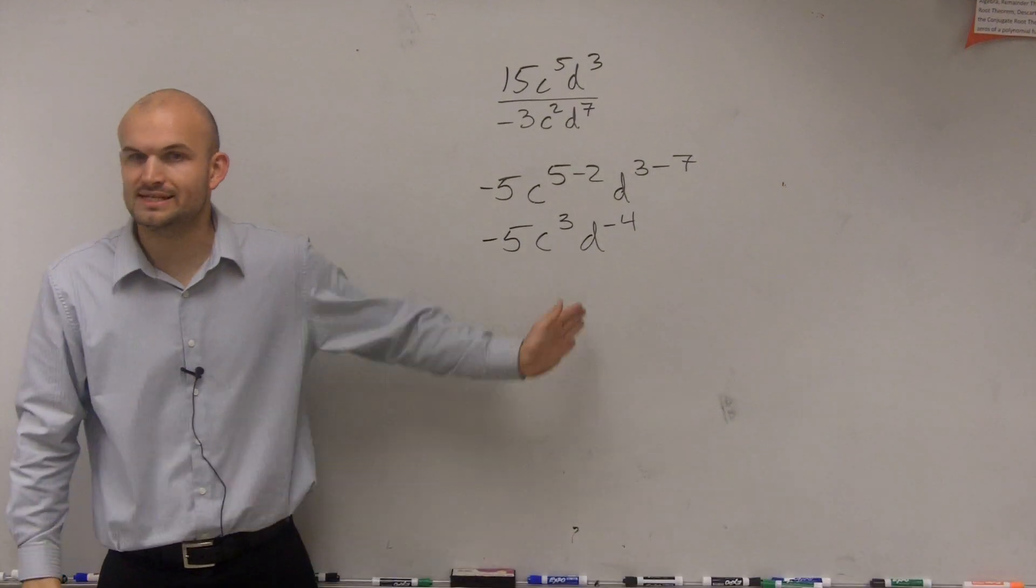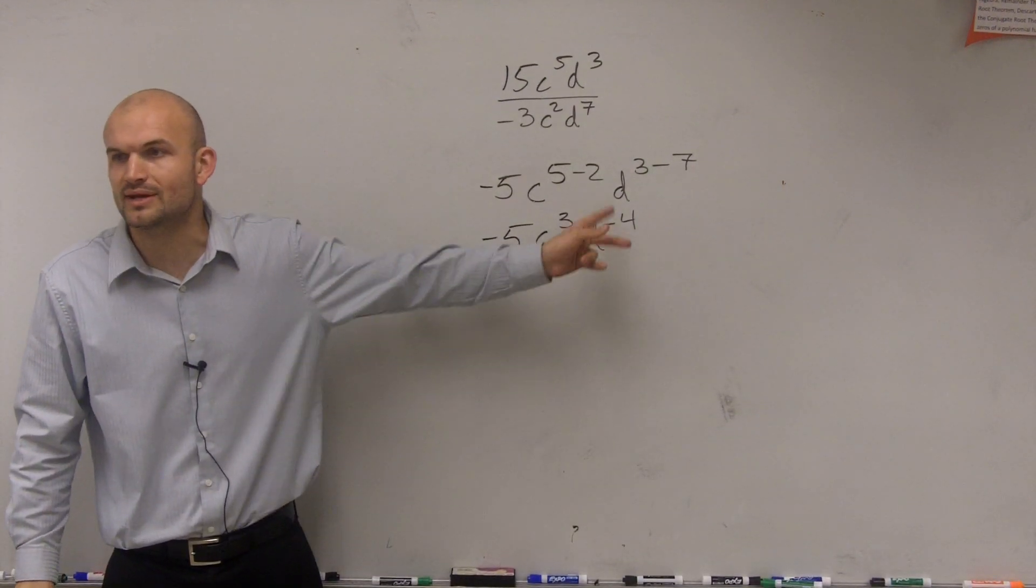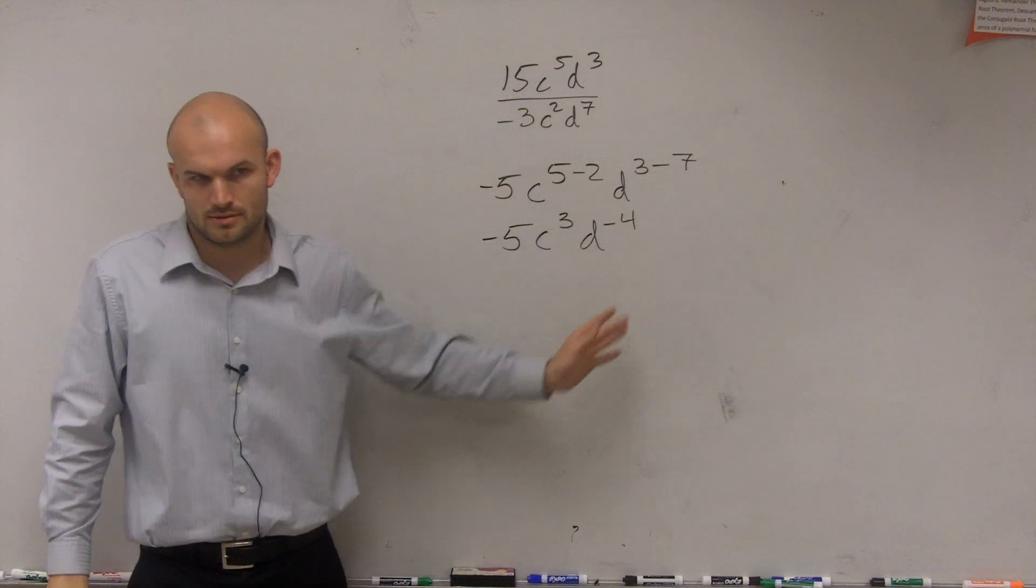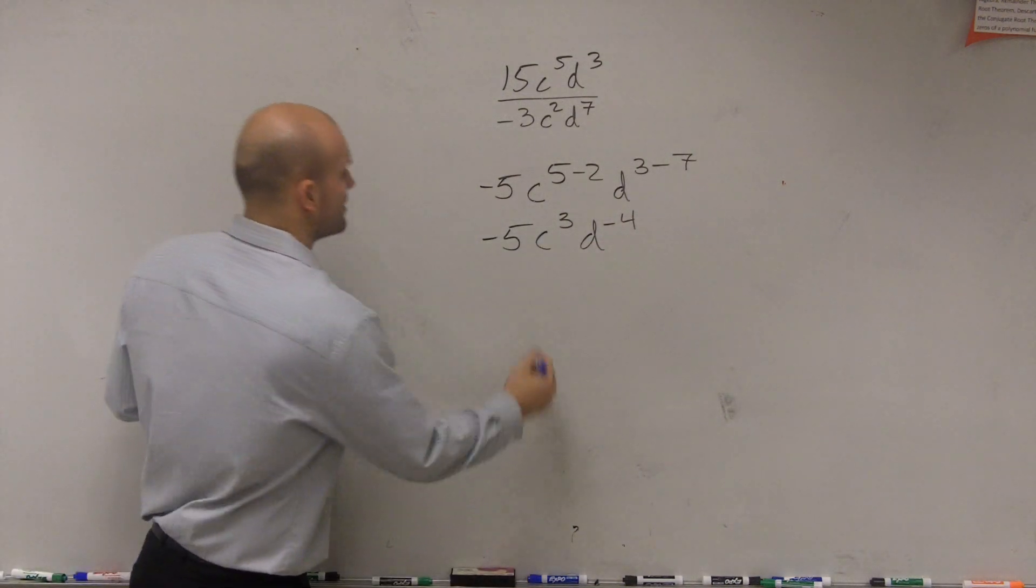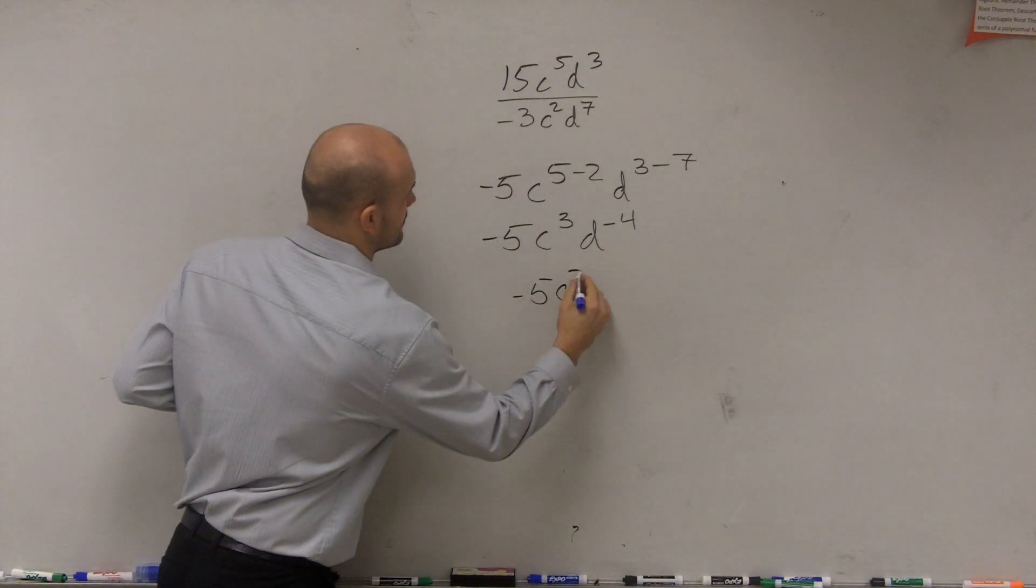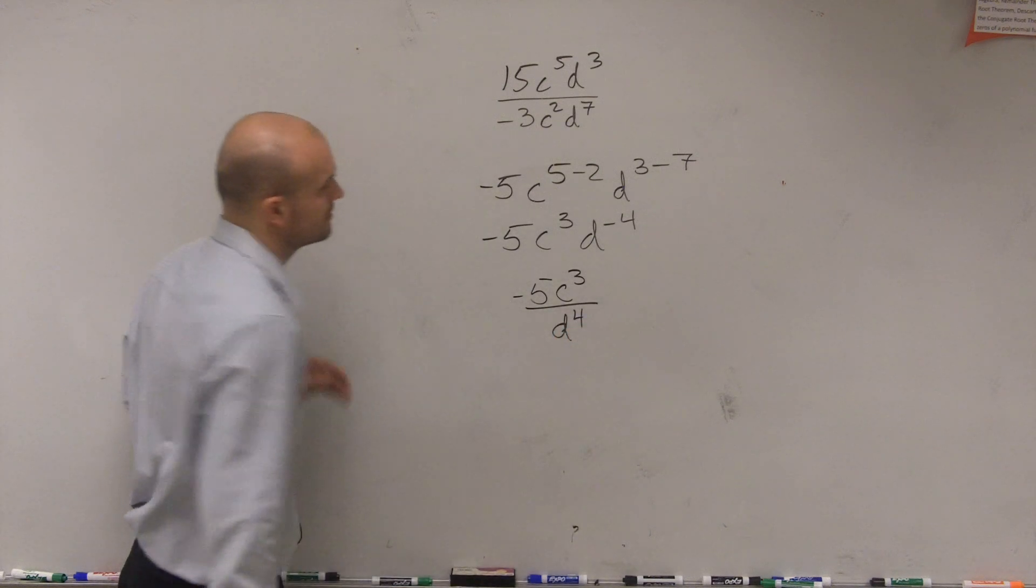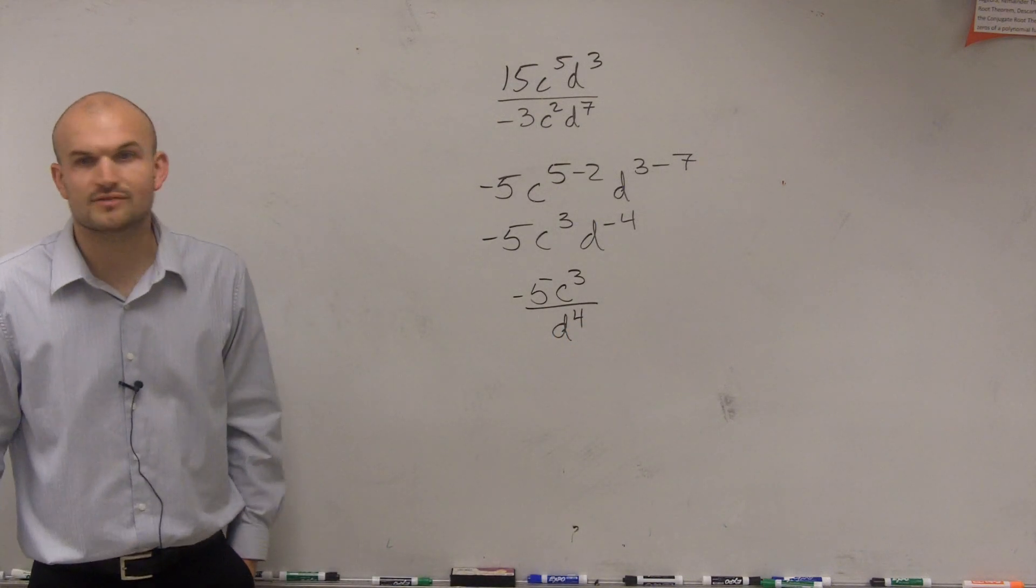And like we did last problem, that d to the negative fourth, to make it positive, we've got to put it on the denominator. So there we go. And we'll leave it as the positive version.